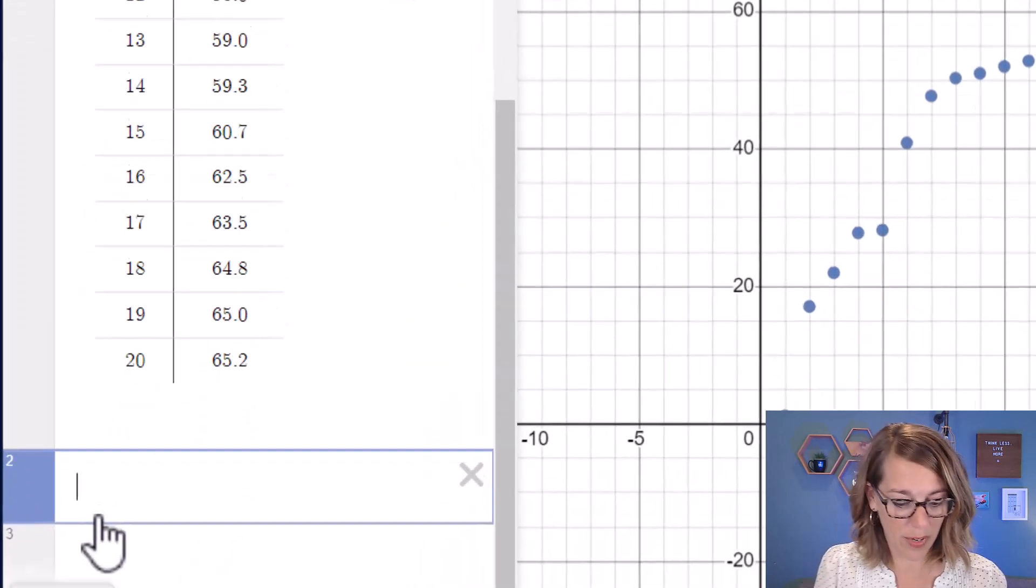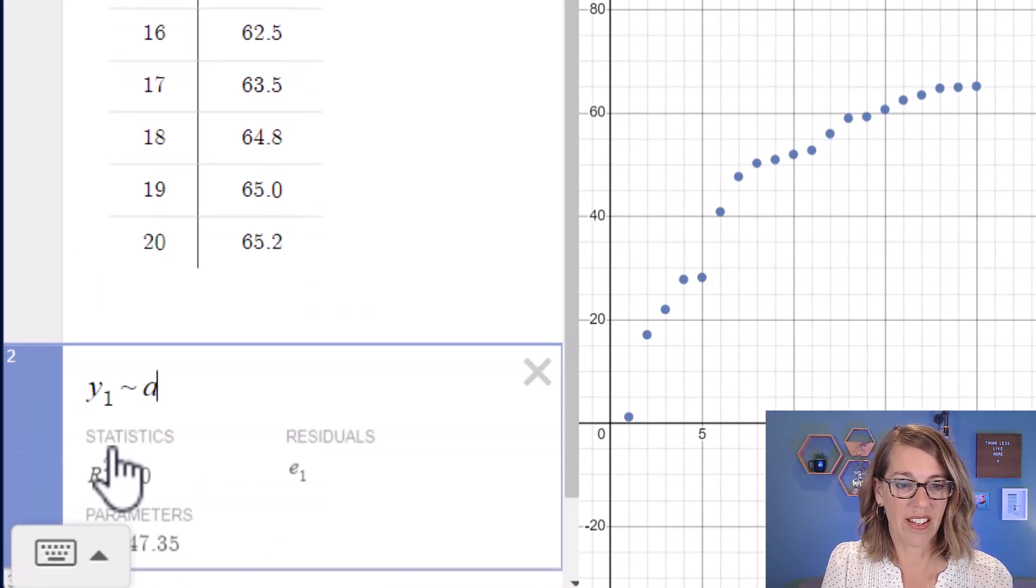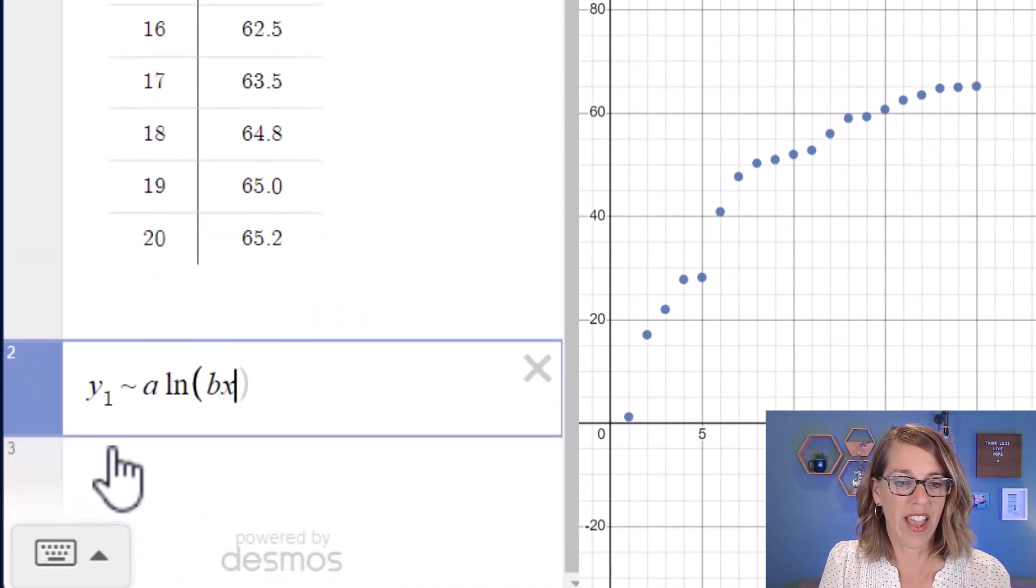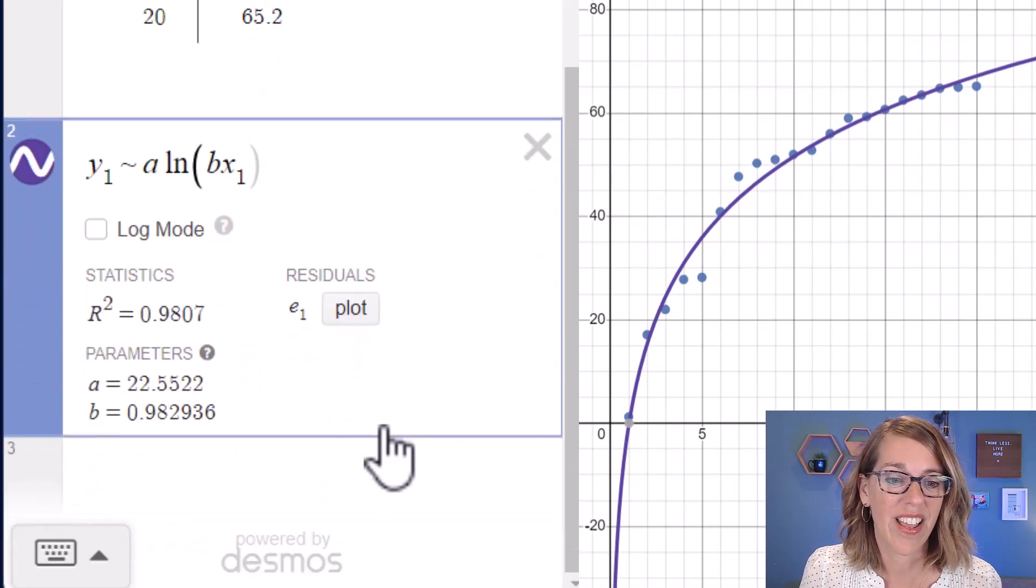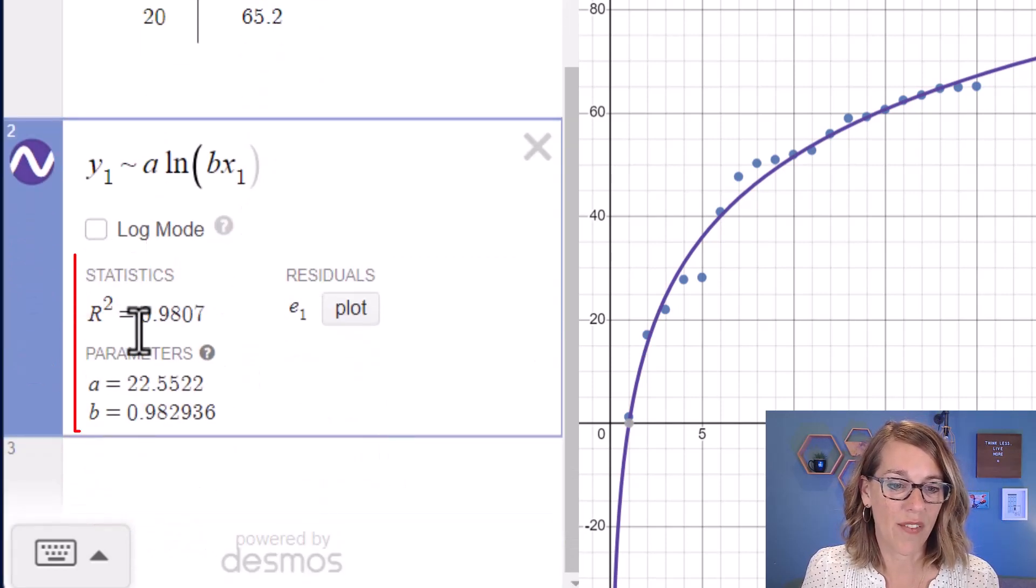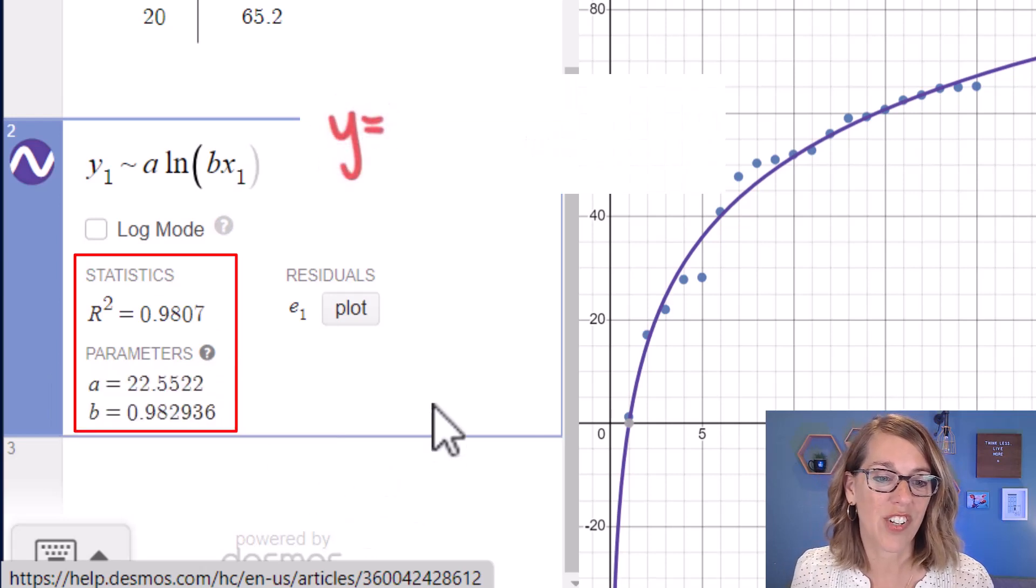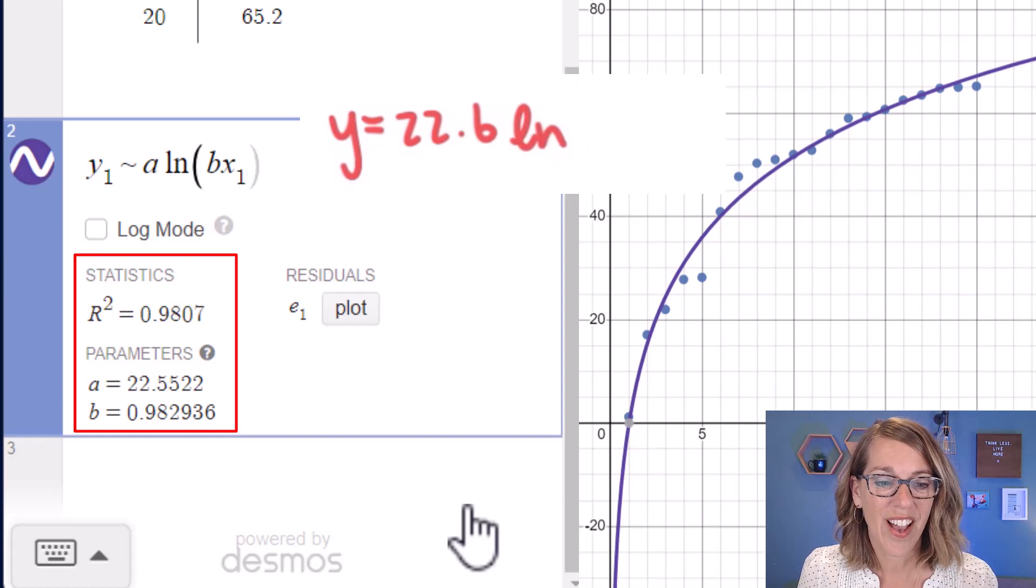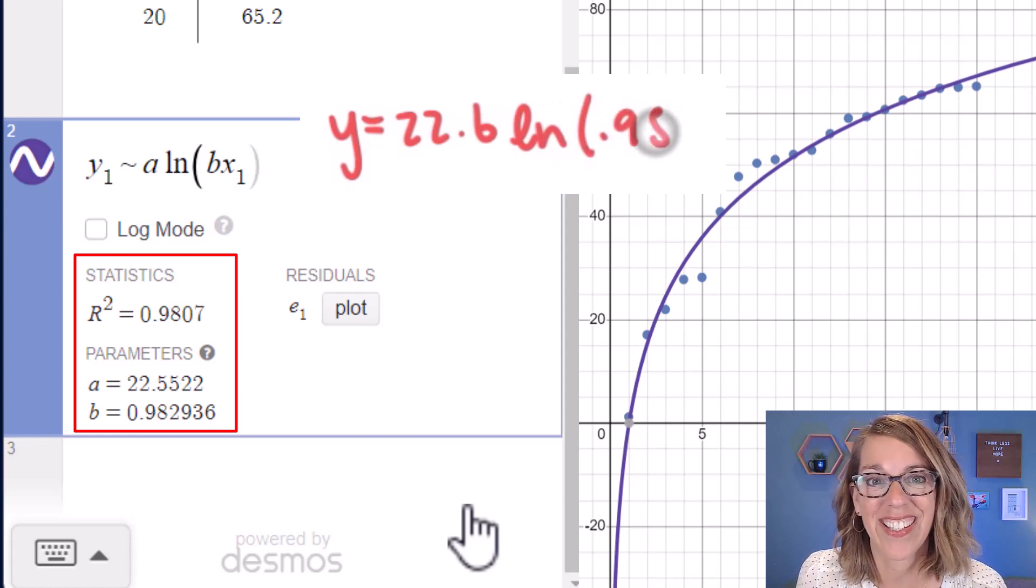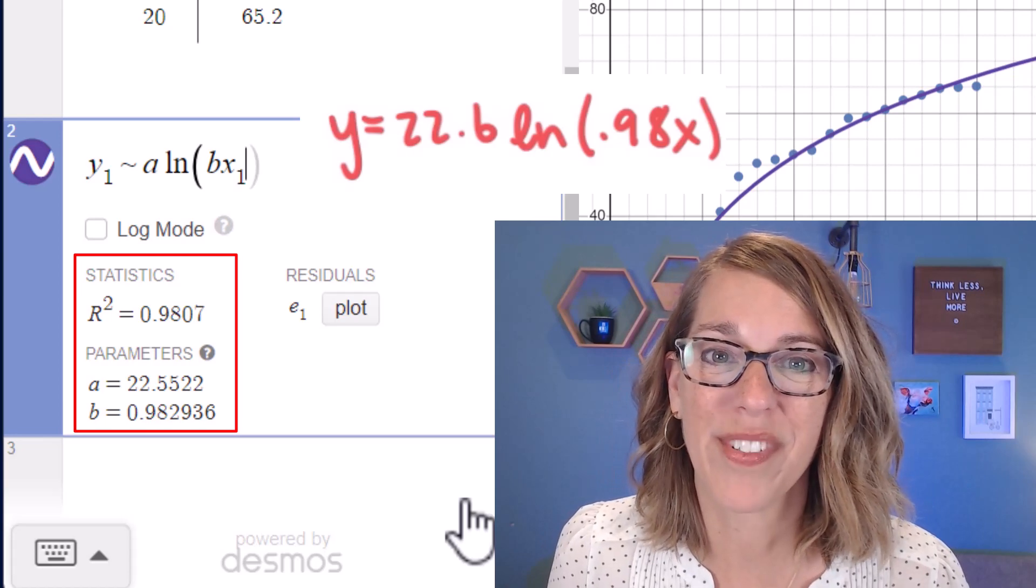Let's go ahead and do our logarithmic regression now. y1 tilde a natural log bx1. And I can add a plus c, but I think I'm actually really good there. And I do have an r value, which is really great. And I can write this logarithmic regression as 22.6 natural log of 0.98x. Take a look at this next video to learn more about Desmos. Thanks for watching.